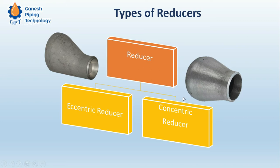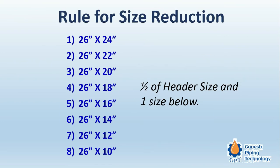Moving ahead, we are going to see an important rule which is very useful whether you are in design or in the site and erection team. The rule addresses the limitation for size reduction in a reducer. For example, if you have a major diameter of 26 inches, what will be the minimum size of the reducer? The rule is: half of the major diameter.